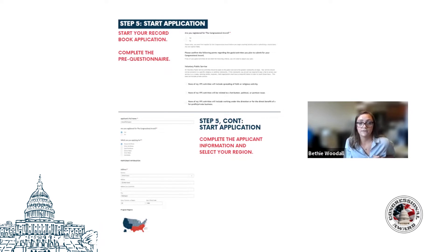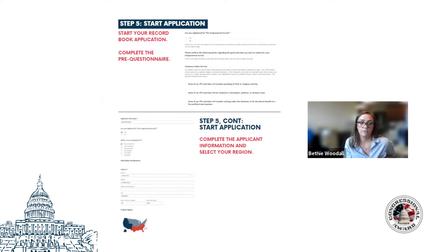They will first fill out their general information, much like we have on our paper record book, confirming their most up-to-date address, designating what region they're in, and updating any contact information. The online record book is modeled directly off of the paper record book, so the information we're requesting is not changing. We're just getting a little more assurance that everyone is meeting the requirements, which should hopefully cut down on revisions on the participant end.